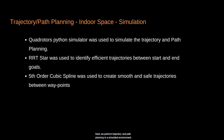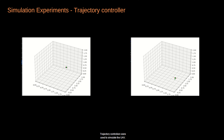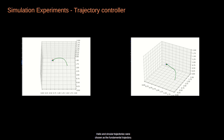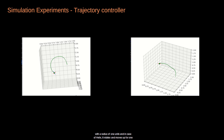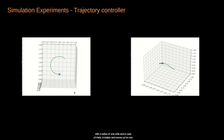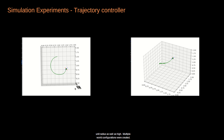Next, we perform trajectory and path planning in a simulated environment. A Quadrotor Python simulator was used to simulate and verify the algorithms. RRT* was used to path plan between the start and end goal. 5th order cubic splines were used to create smooth and safe trajectories between waypoints. Trajectory controllers were used to simulate the UAV. Helix and circular trajectories were chosen as the fundamental trajectories — the UAV rotates about a point with a radius of 1 unit, and in the helix case it also moves upward with 1 unit radius and height.